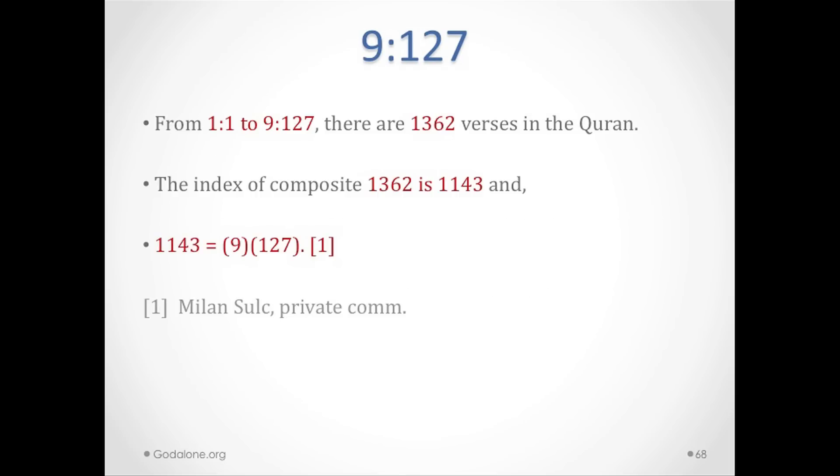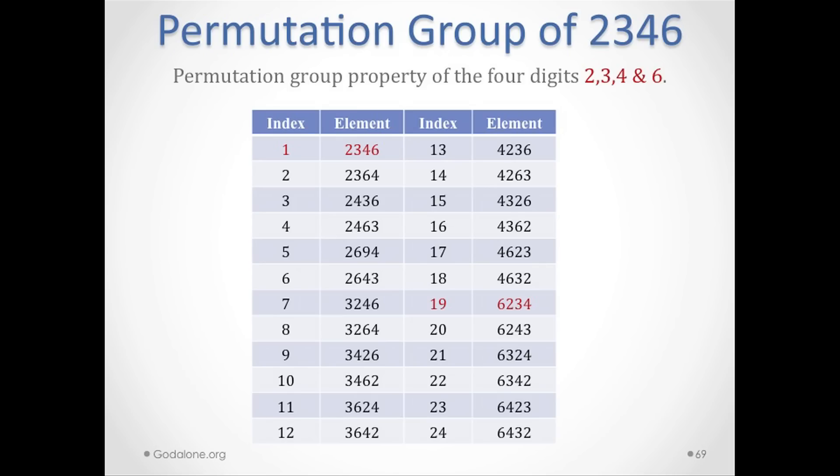From 1:1 to 91:27, there are 1362 verses in the Quran, and the index of composite 1362 is 1143. In other words, the 1143rd composite is 1362, but 1143 is 9 times 127. From 1:1 to 91:27, back to 9127.